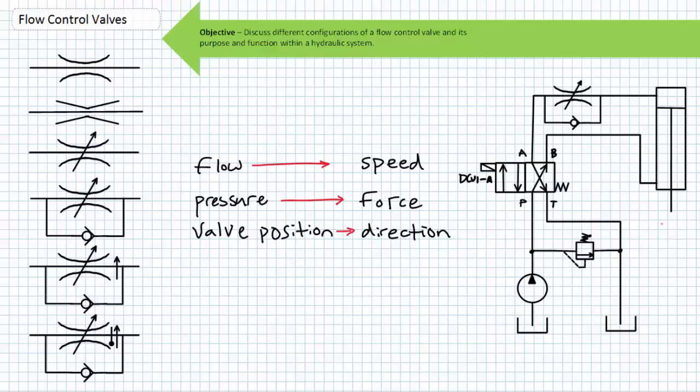If you're zooming in on a box with just an actuator in it, or zooming out on a very simple hydraulic system without a flow control valve in it, don't worry about it. Flow is speed, pressure is force — it's that simple. However, when you've got a device in there whose whole purpose is to restrict or control flow, things get a little more complicated.